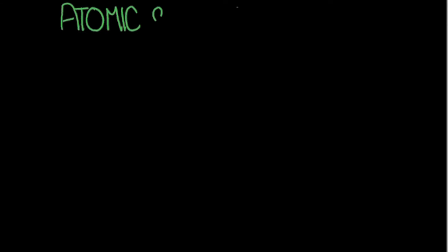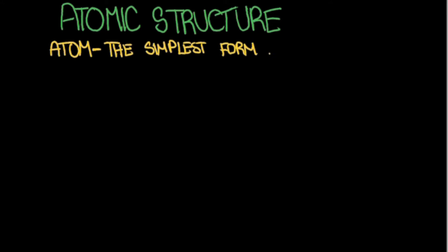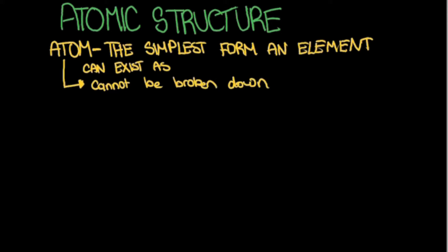In this video, I want to talk about the atomic structure and the experimental evidence behind it. So what is an atom? An atom is the simplest form an element can exist as while it maintains its chemical properties. Another thing we must note is that they cannot be broken down into simpler substances by chemical reactions.